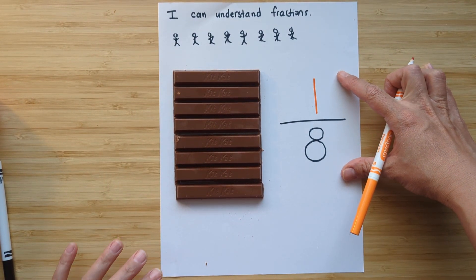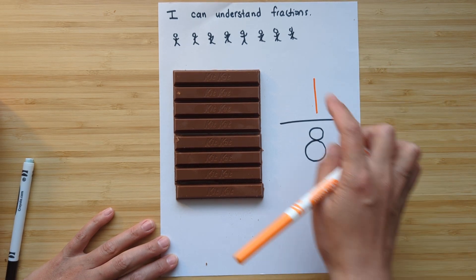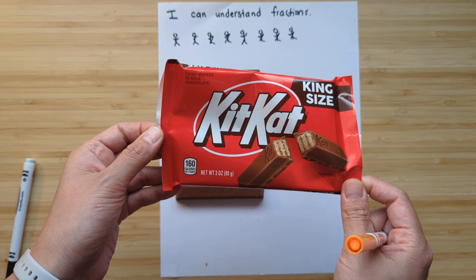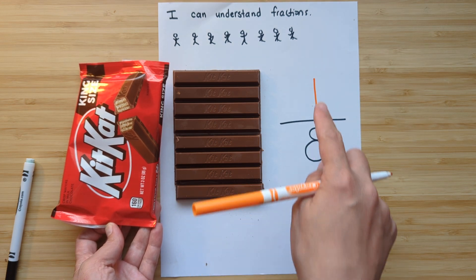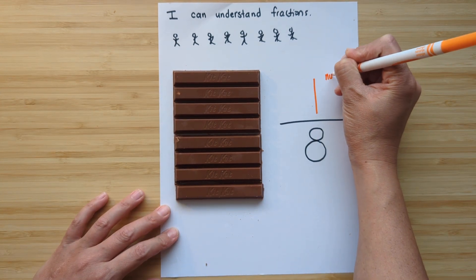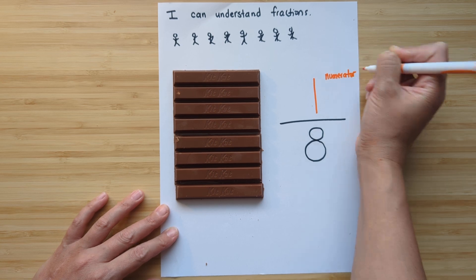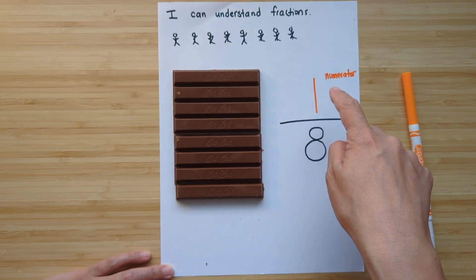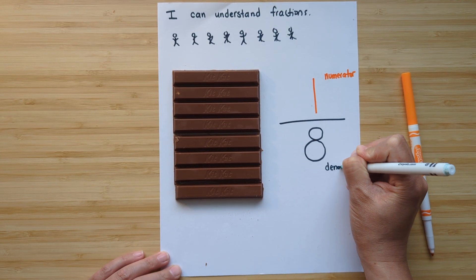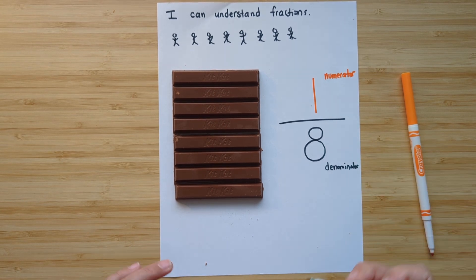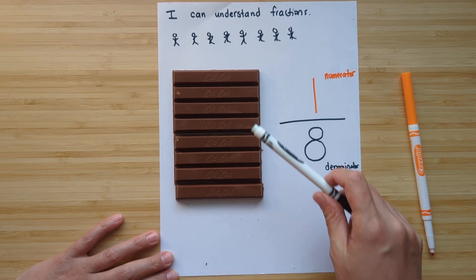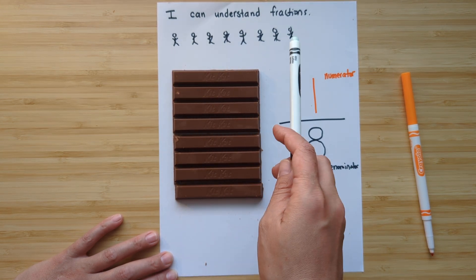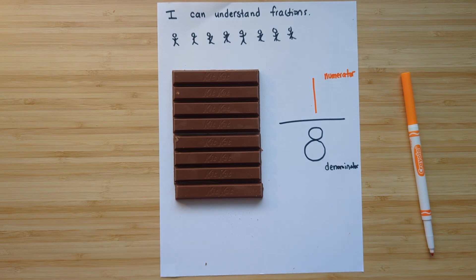What we just created is a fraction — one-eighth. Each person is going to get one-eighth of the whole KitKat. This top number is called a numerator. The top number represents what's being shown — each person gets one out of the eight pieces. This bottom number is called a denominator. The denominator tells us how many pieces there are in the whole. This is a fraction.